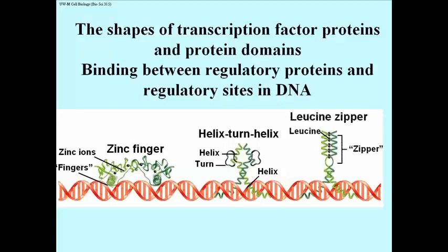The last that I want to show you is what's called the leucine zipper protein. The leucine zipper itself is a way of holding two separate proteins in a dimer together. Leucine is a hydrophobic amino acid, and if you have a regularly spaced bunch of leucines on two strands, they will tend to come together like a zipper. And the part of the protein extending from either half of the zipper are helices that penetrate the major groove and are responsible for binding specific DNA sequences.